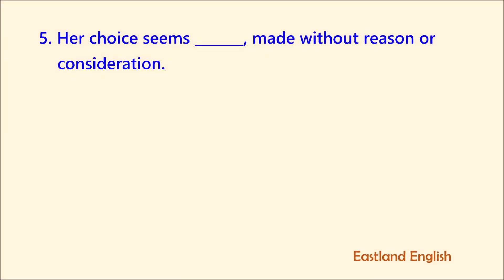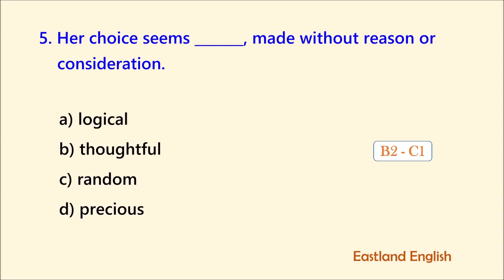Number five. Her choice seems blank, made without reason or consideration. A. Logical. B. Thoughtful. C. Random. D. Precious. Our first key phrase is without reason. Reason is a synonym for logic. Because it's without logic, we can't use A. Consideration is the same as thinking about something, therefore we cannot use B. Precious is out of context as it's the same as valuable. The best choice is random, which means without reason. Her choice seems random, made without reason or consideration.